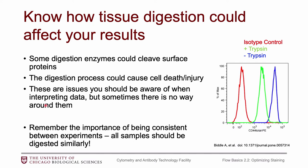With flow cytometry, we have the benefit of looking at a lot of cells in a short period of time. The downside is that we may miss some cells because we can't always get all of them out of the tissue. Ultimately, just remember to be consistent with your protocol — always use the same time, the same temperature, the same concentration of your digestion enzyme — so that everything is digested as similarly as possible and you can interpret your results in the end.